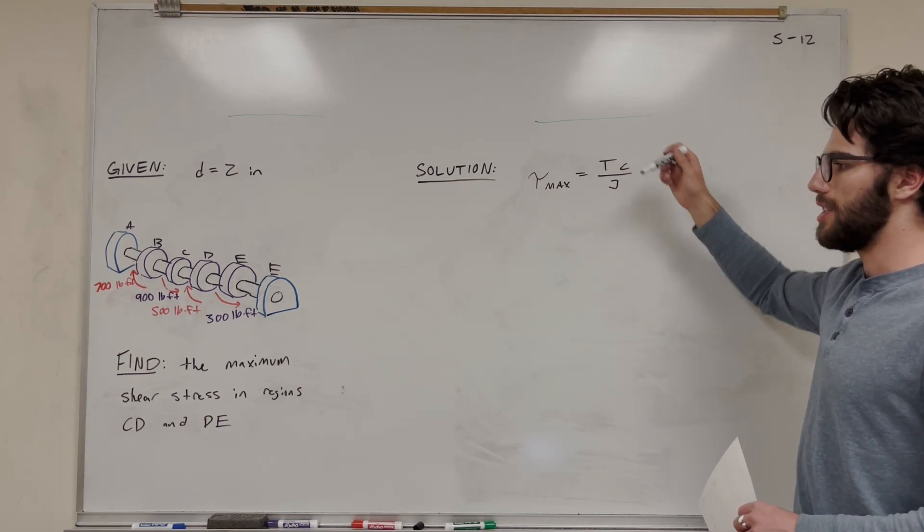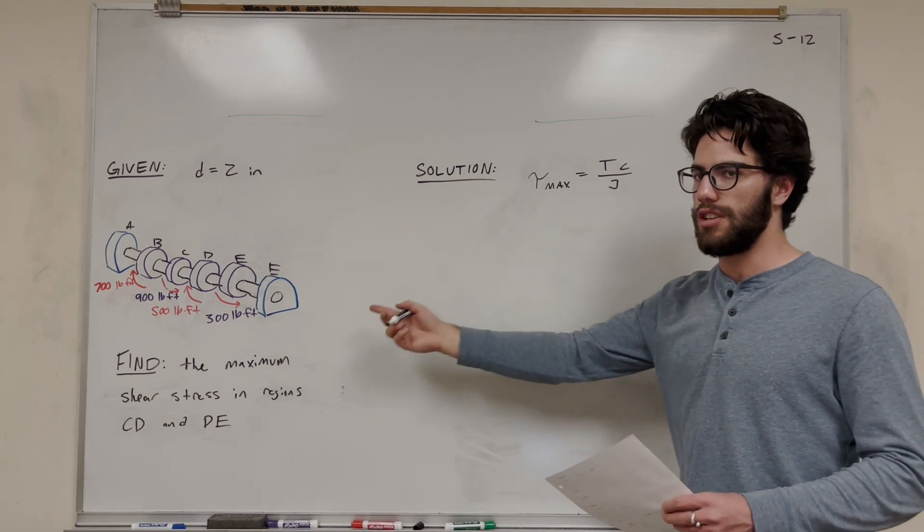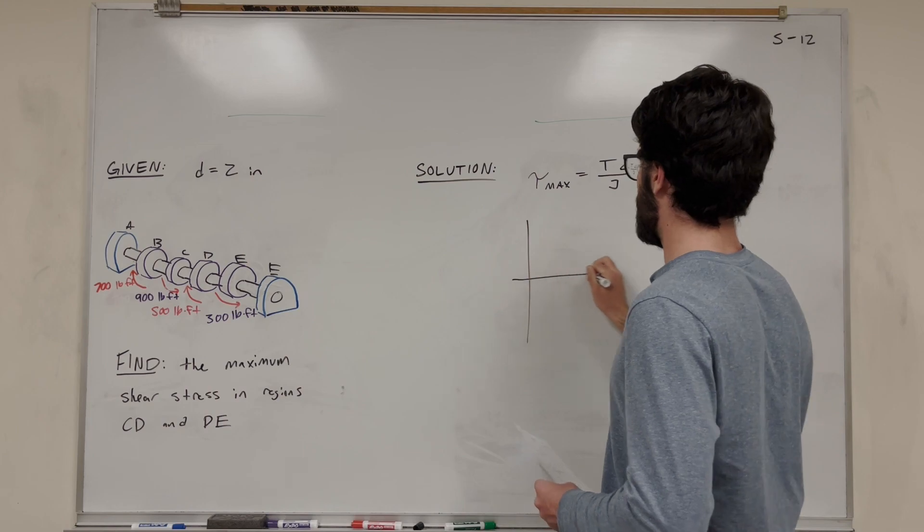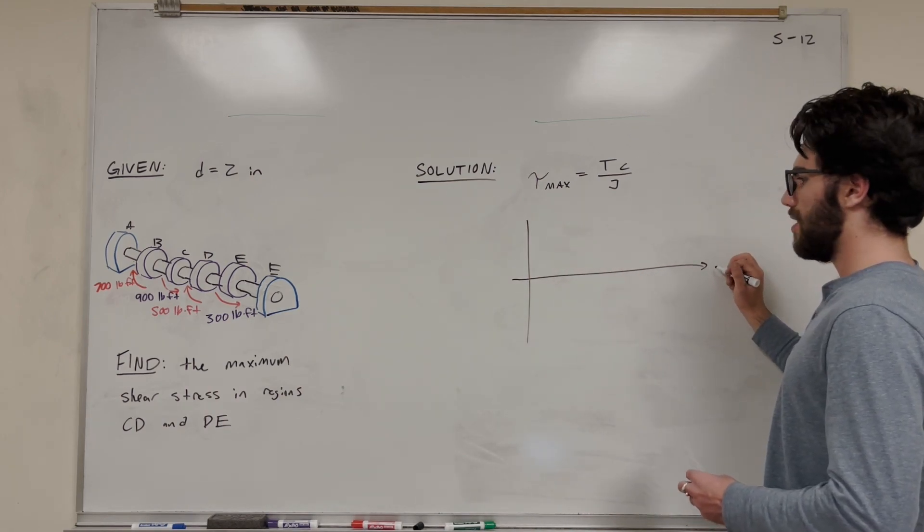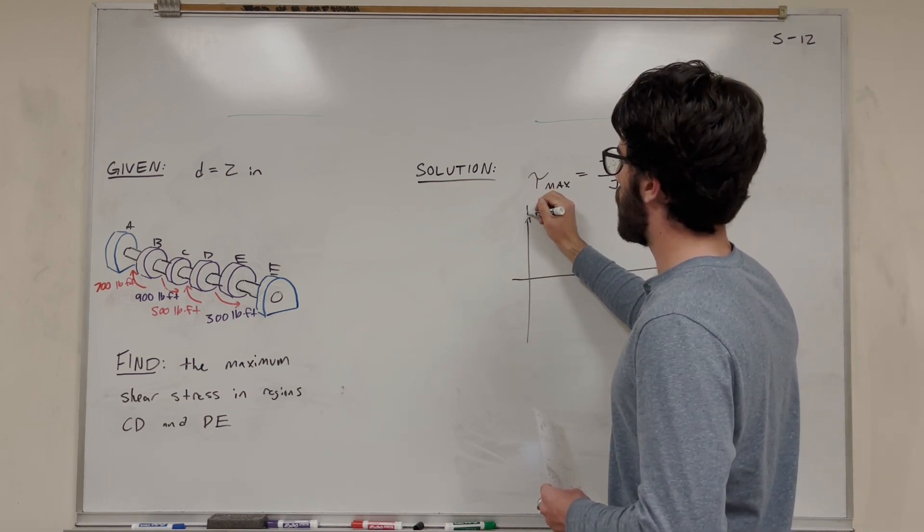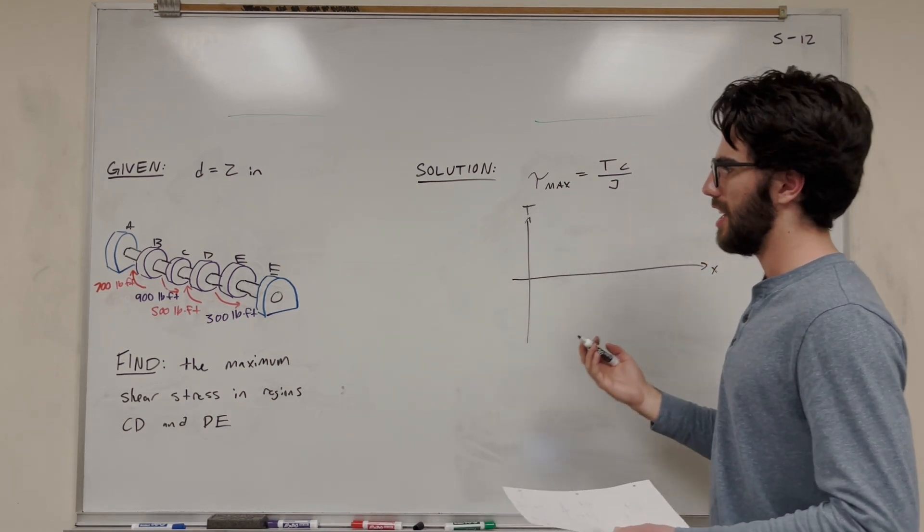First of all, let's find what the torque is in each segment of the region. We're trying to find CB and DE. A useful tool we can use for this is to make a little diagram like this. So this is going to be X, this is as we go out, and then this is torque. So this is the torque in each segment.